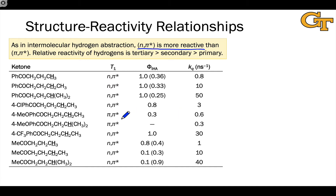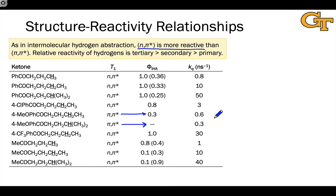The π-π* state lacks that orbital, and we can see that in the data. The quantum yield of intramolecular hydrogen abstraction is much lower for compounds containing π-π* lowest triplet states — completely undetectable in one case — relative to those with n-π* excited states. The rate constants are also generally much lower, so the data supports the claim that n-π* is more reactive than π-π*.